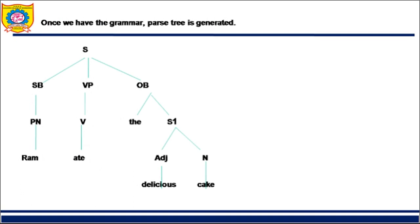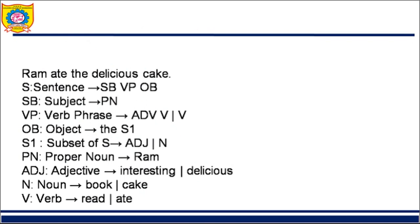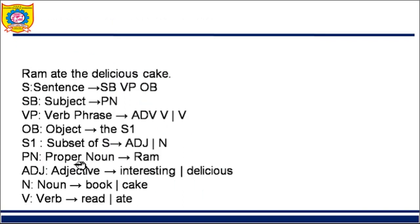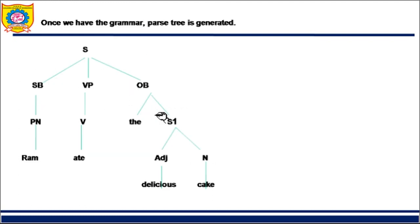Now a parse tree is generated. Our first rule is sentence consists of SB, VP, and OB. If you check the parse tree, you have S divided into SB, VP, and OB. Further, SB can be a proper noun. Ram is a proper noun, so from SB we get proper noun and then Ram appears as the leaf node.